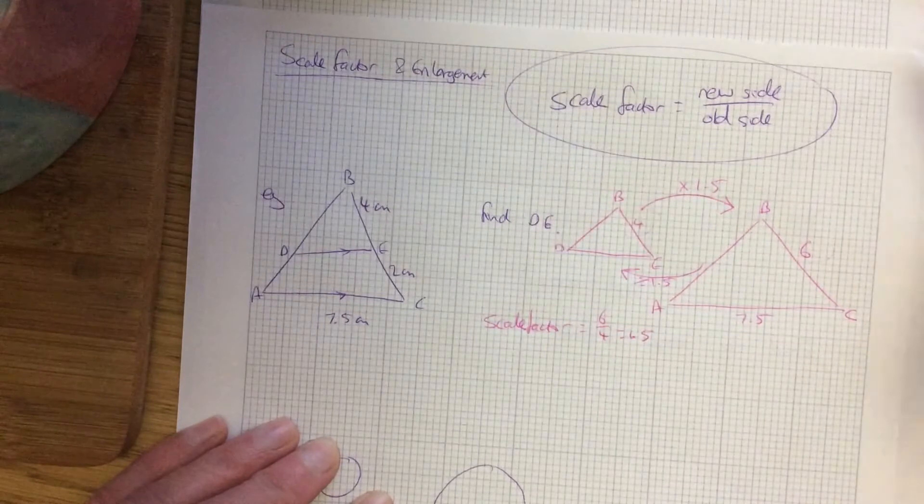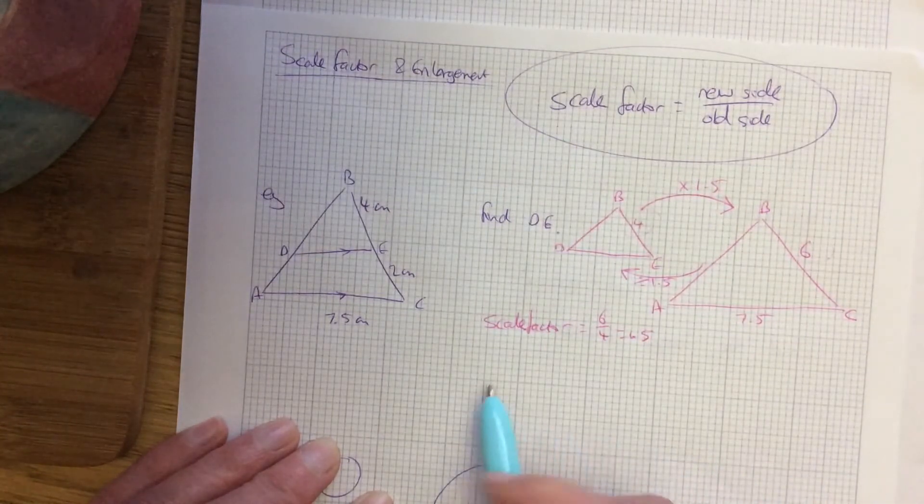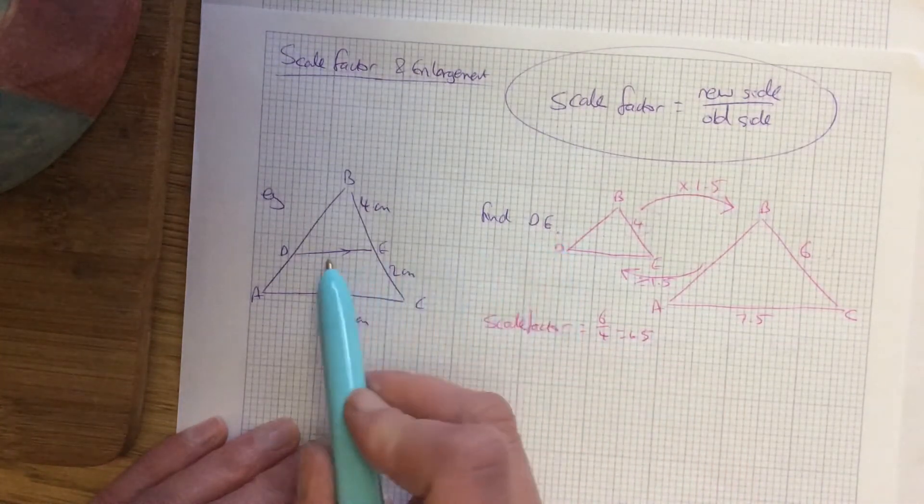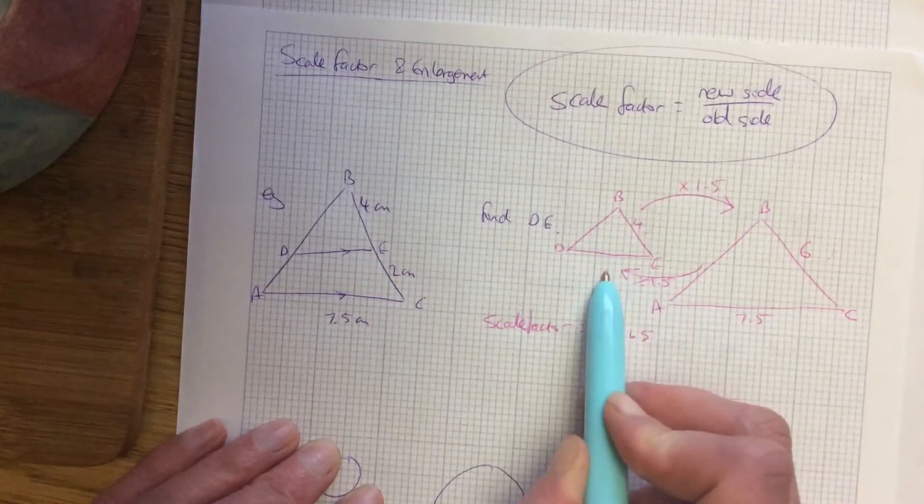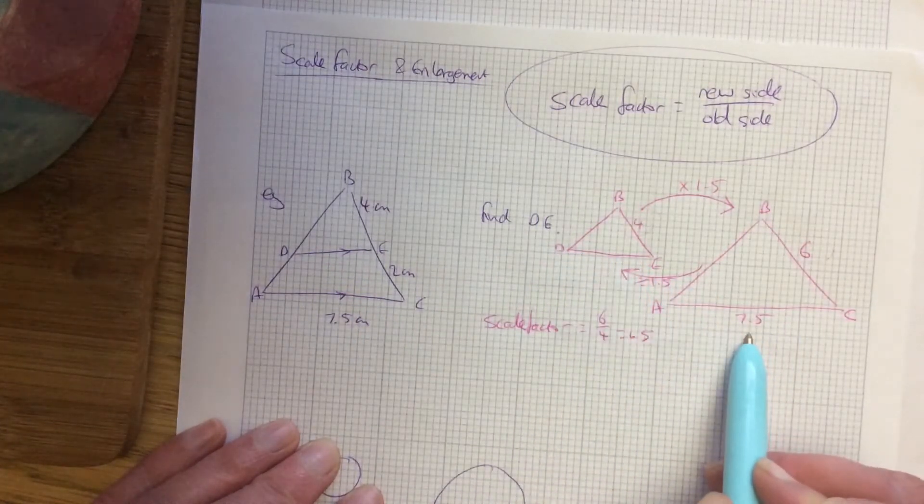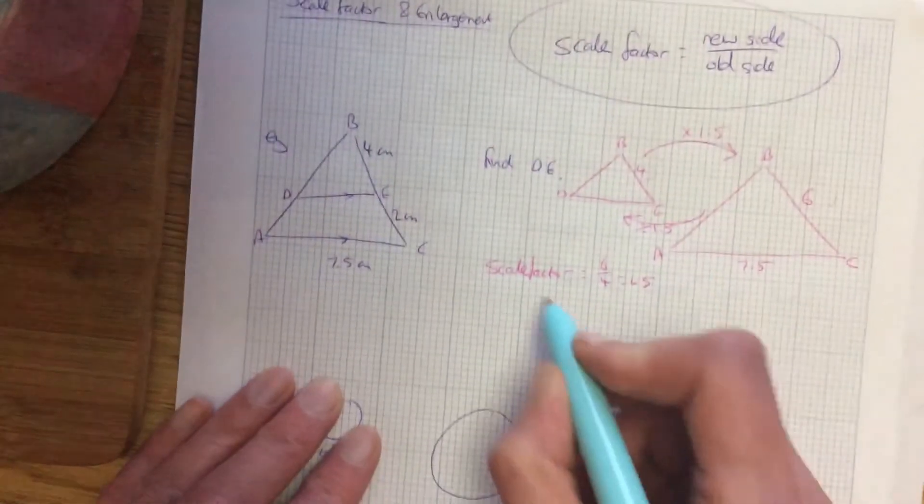Once you get to that stage you've got the question pretty much answered. Now I want to find DE, now where's DE? It's this line here so I'm going backwards so I'll take 7.5 and I'll divide by 1.5.